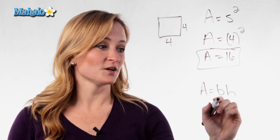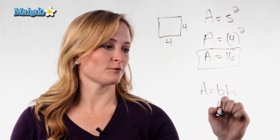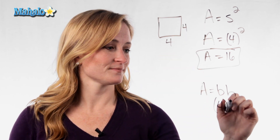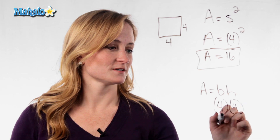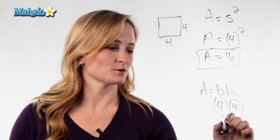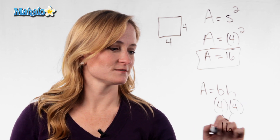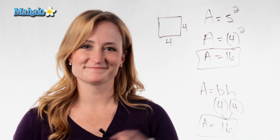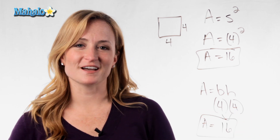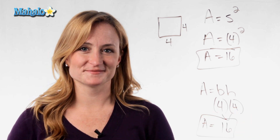You would plug that in — you would have a base of four and a height of four, which is still four times four, which is 16. And that's how you find the area of a square.